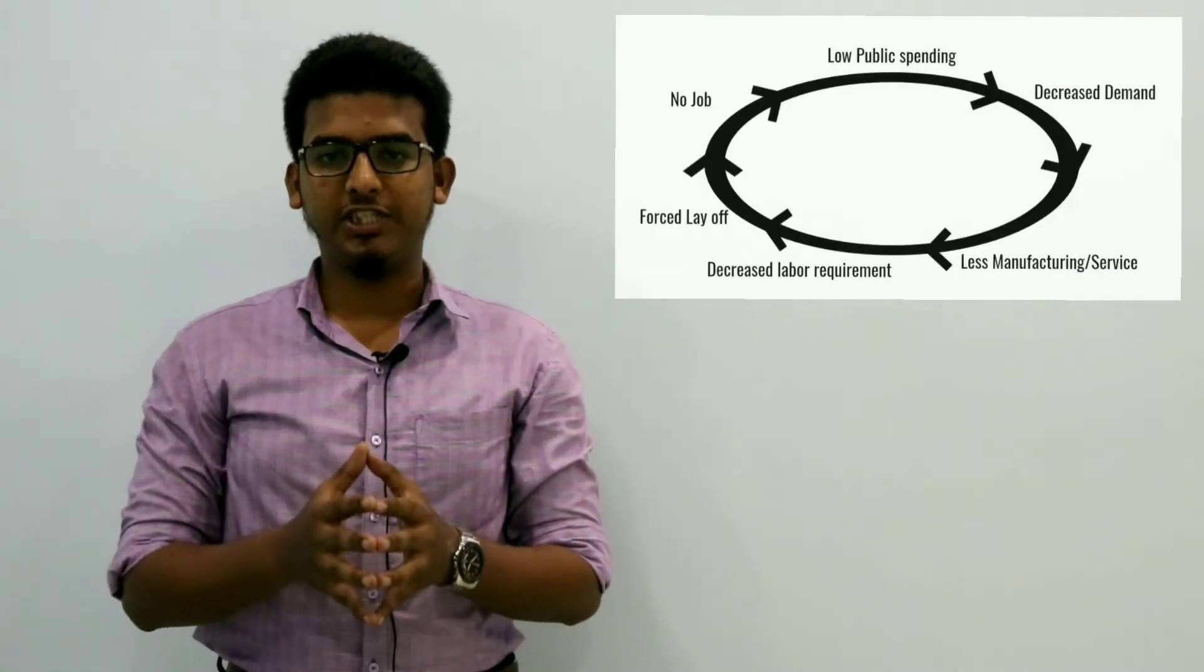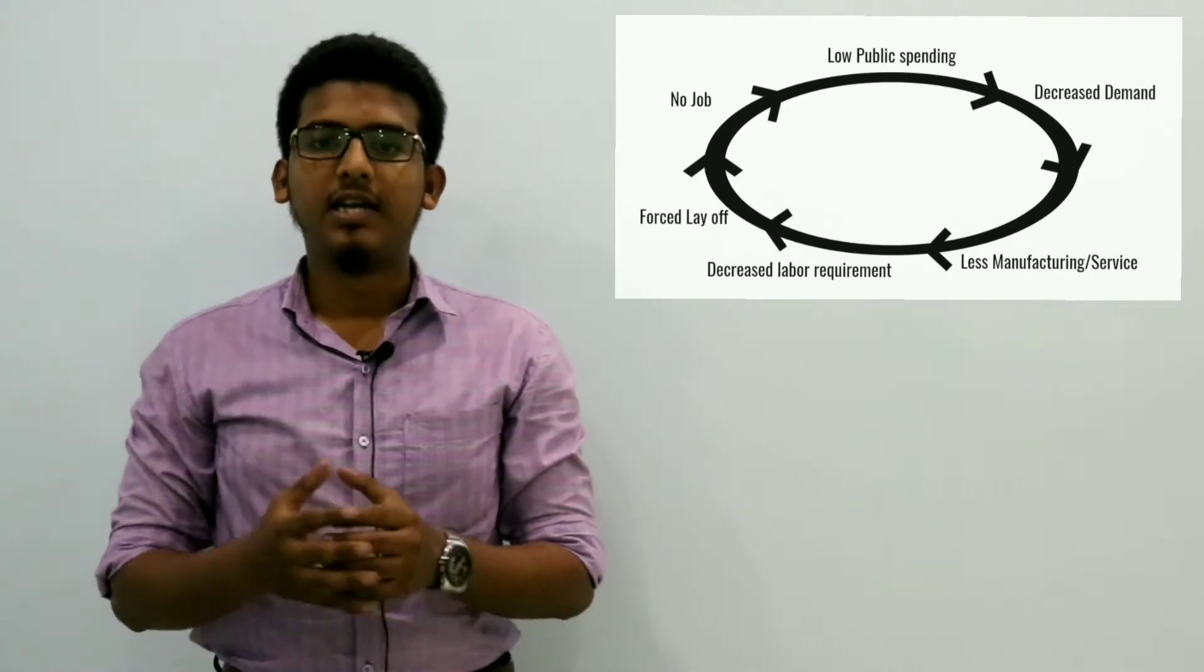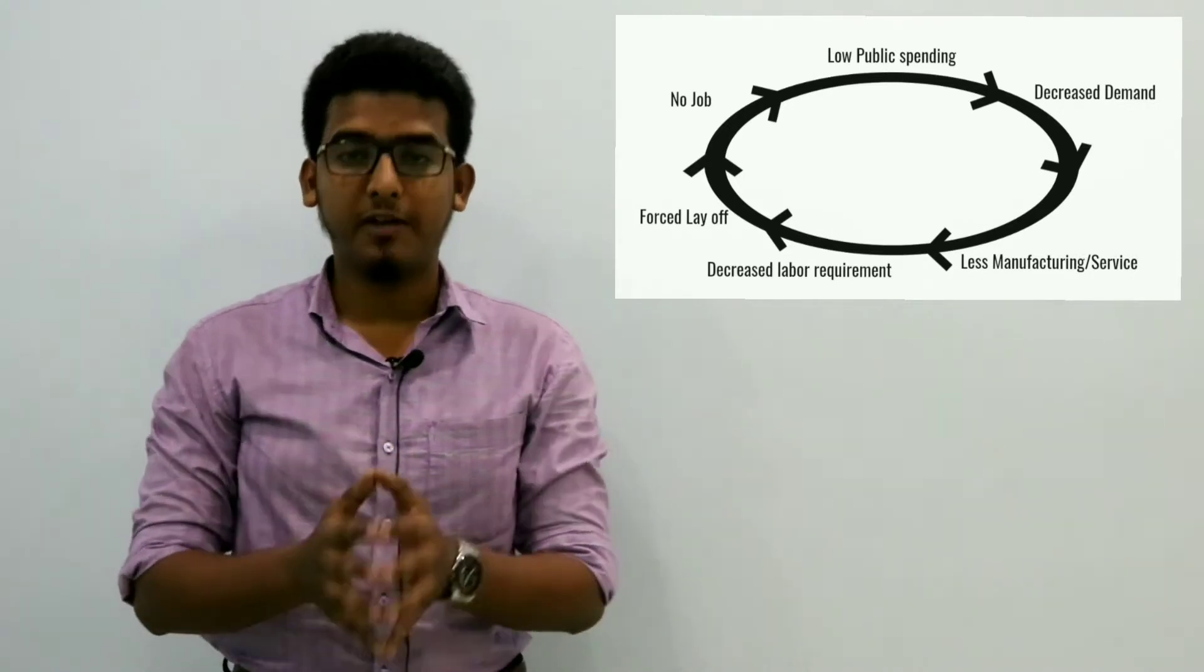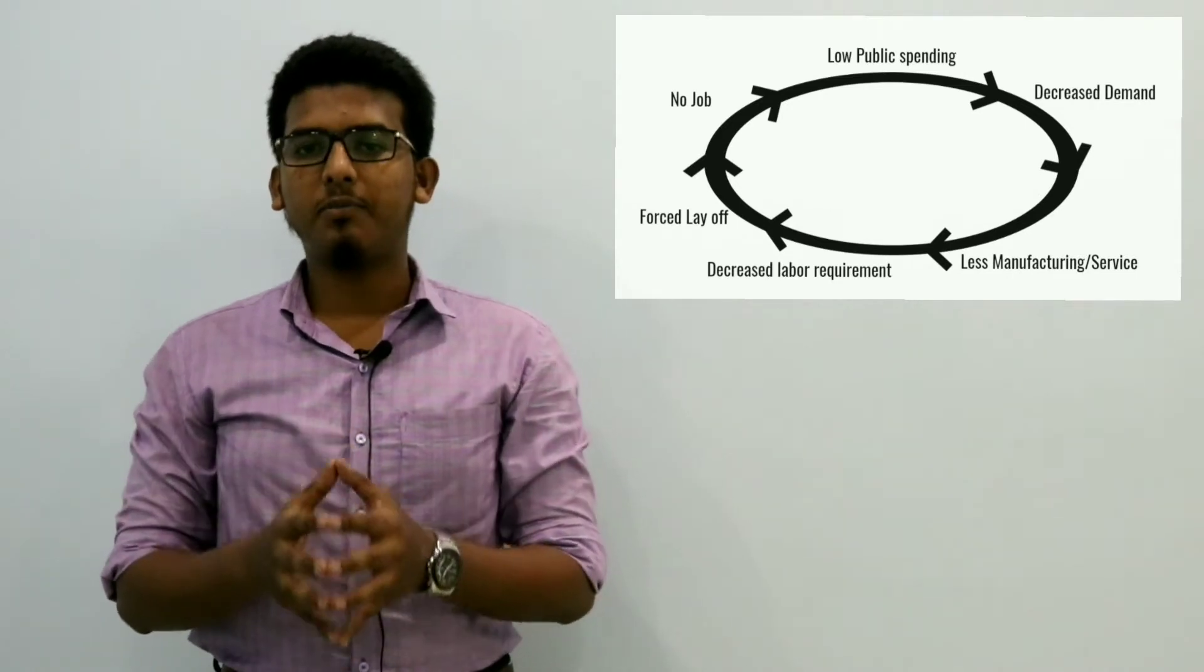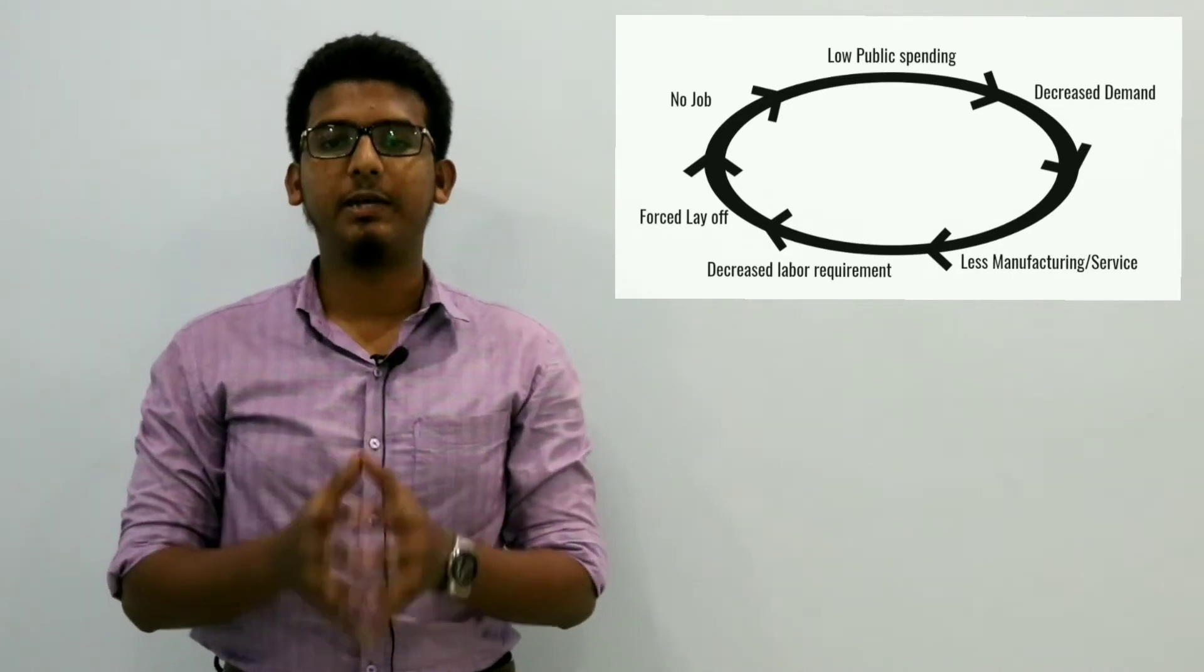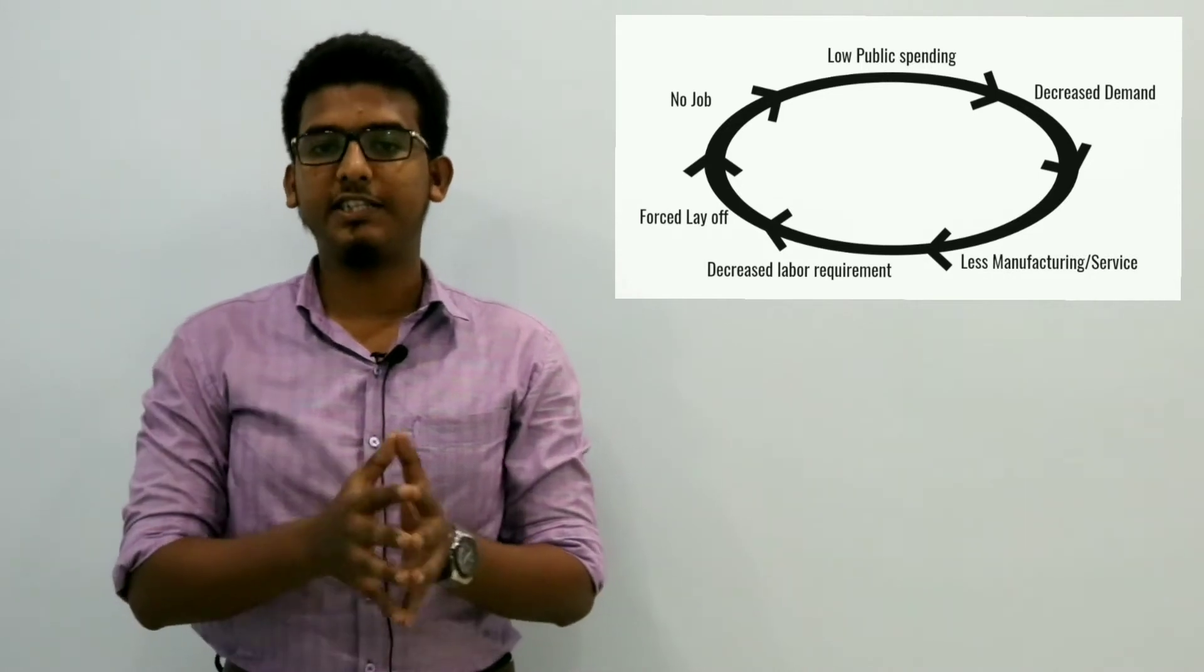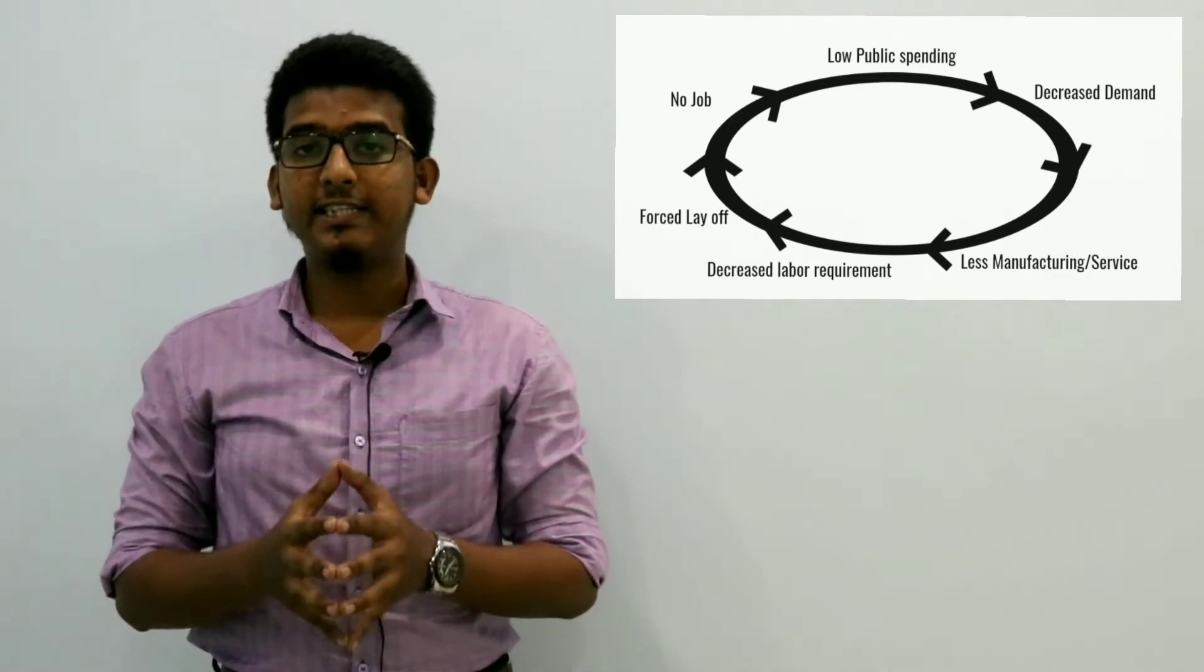There is a cycle which connects the cause with the effect. When people stop spending money, it means there is less purchase, which means less demand. Less demand implies less manufacturing. Less manufacturing requires low labor. Low labor requirement with decreasing turnover forces companies to lay off their existing employees. No job is again a reason for low public spending. The reason public stops spending is the reason for recession.